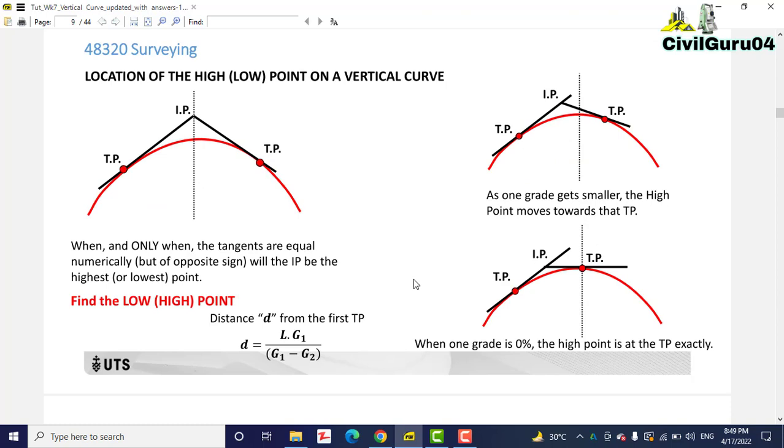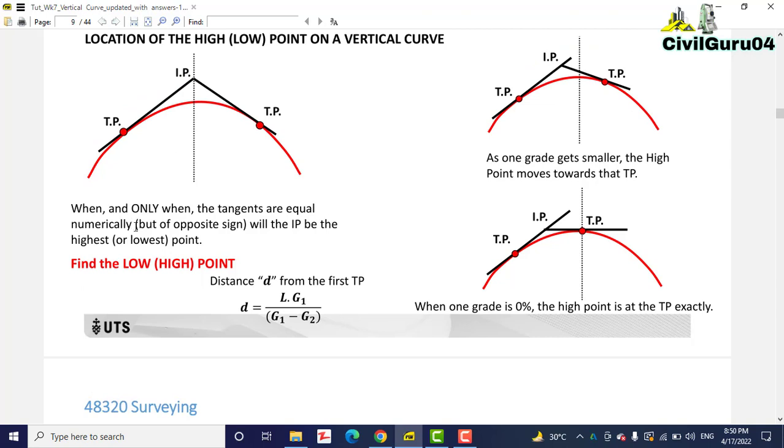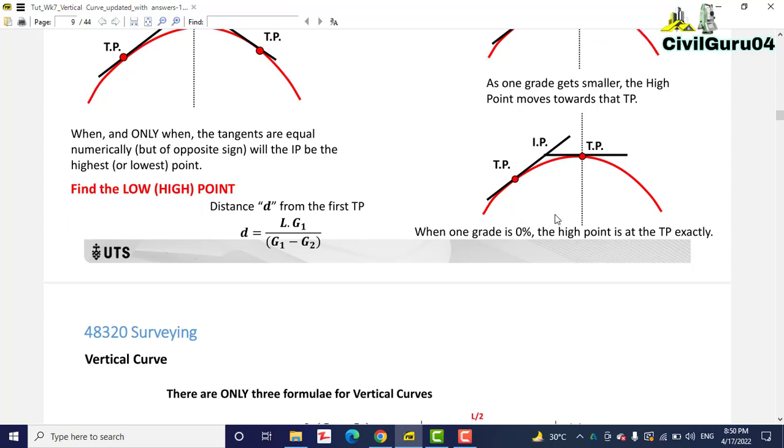In different types of curve, our low point on a vertical curve will be changed. When this type of curve we have, the tangents are equal numerically but of opposite sign, will the IP be the highest or lowest point. In this situation, as one grade gets smaller, the high points move towards the TP. You can see here we have highest point for this type of curve. When one grade is 0, the high point is at the TP exactly.